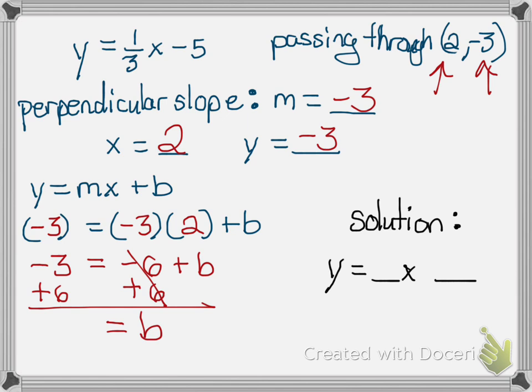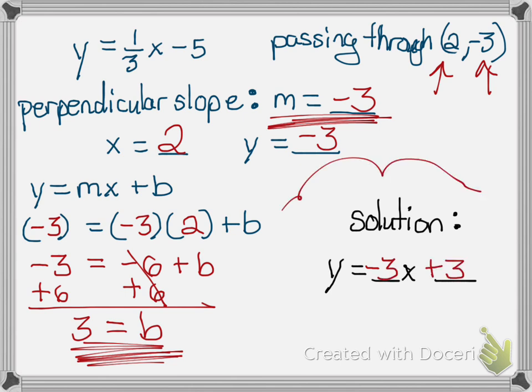and then negative 3 plus 6 gives me 3. So since my b is positive 3, and my slope was negative 3, my solution will be y equals negative 3x plus 3. And that's it!